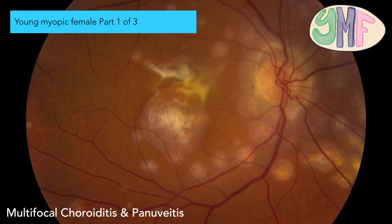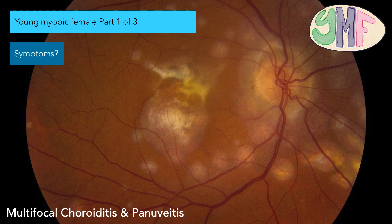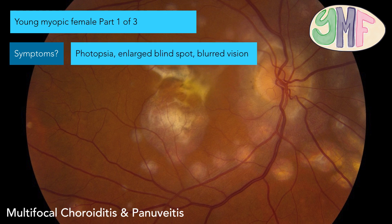Okay, that's the other thing I drew last night. Young myopic female — YMF. It's like the Outer Banks stickers you see on people's cars. Young myopic female. Anyway, young myopic female: part one of three, because there are two others that are going to be this. The symptoms are very much like every — in the young myopic female category, most of them have photopsias, large blind spot, and blurred vision. Although photopsia is common to all three, the enlarged blind spot is only two out of three.